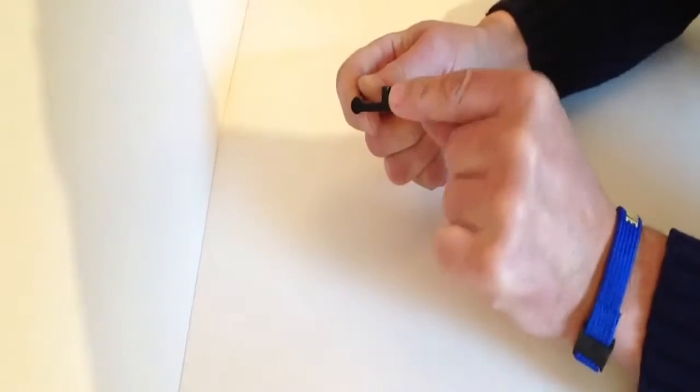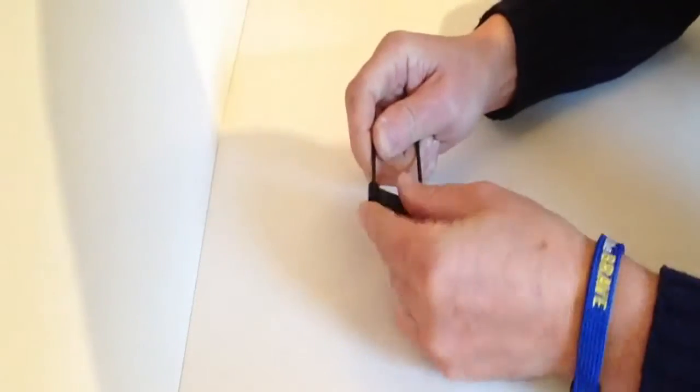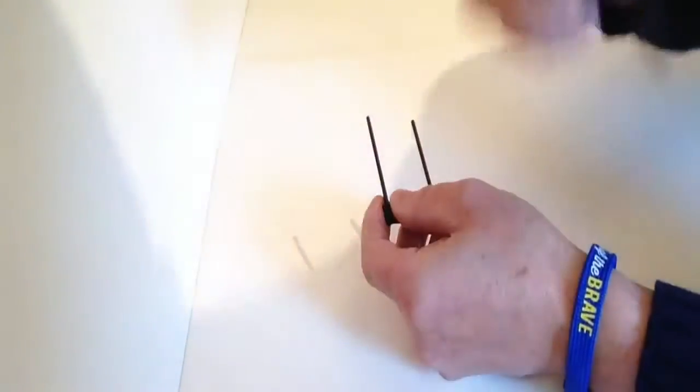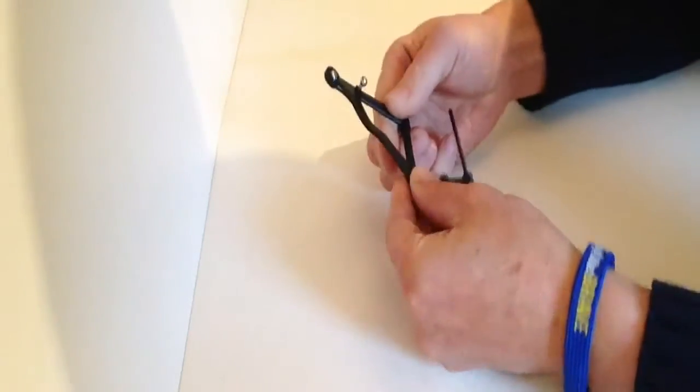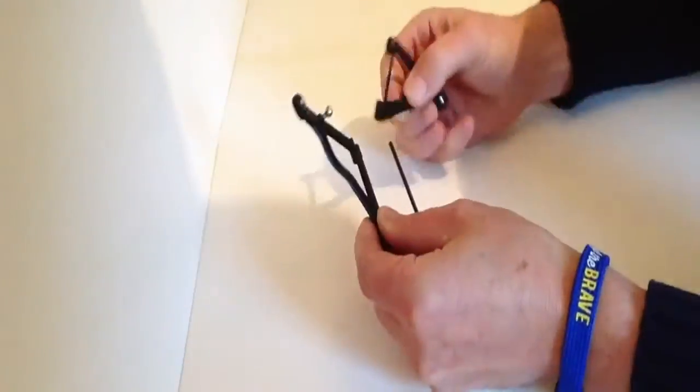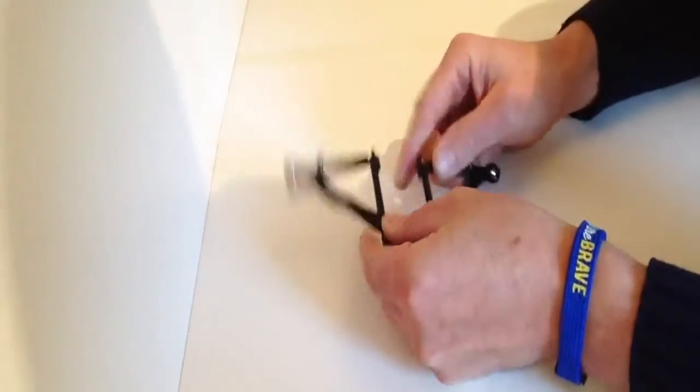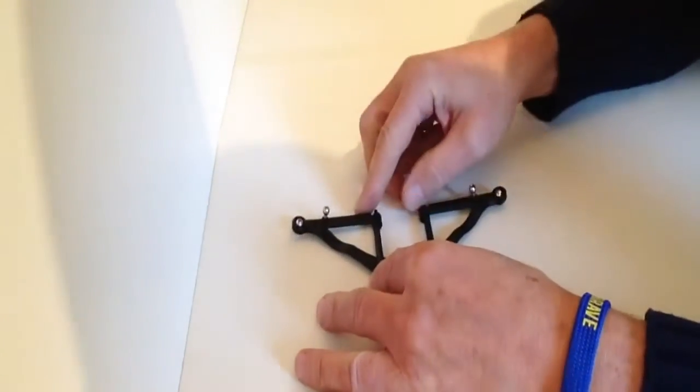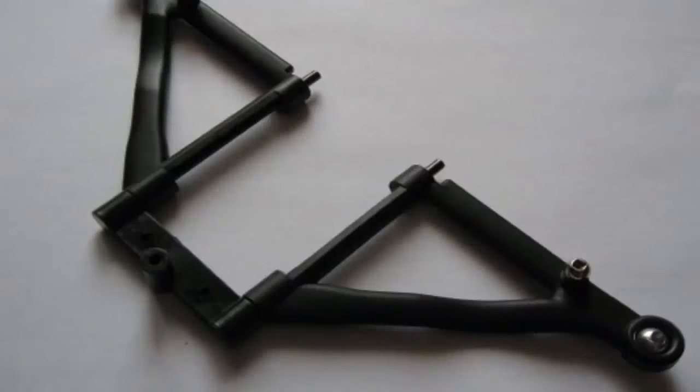Notice that you need this mount part sticking upwards. Take your lower front wishbones from previous issues that we did and then place them like so.